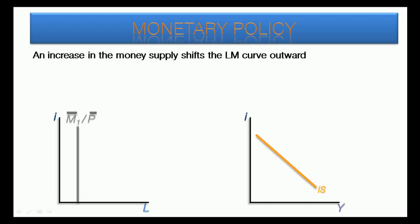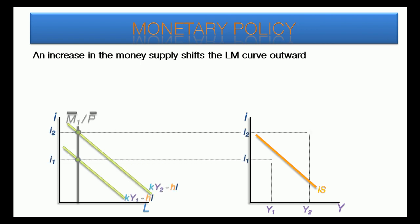Now for the reactions of the money market to a change in monetary policy. If the central bank increases the money supply, M, the real money supply line shifts outward and the LM curve shifts outward accordingly. Here the LM curve is being formed for M1, a low supply of money. This forms the first point of equilibrium at I1 and Y1.